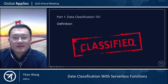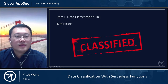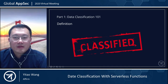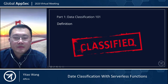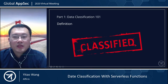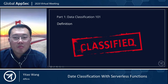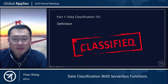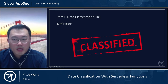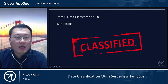We saw this sign a lot, especially in movies and documentaries. This means data behind this label contains some level of sensitive information. Data classification is broadly defined as the process of organizing the data by its relevant categories so that the data might be used and protected more efficiently. It is particularly important when it comes to risk management, compliance, and data security.